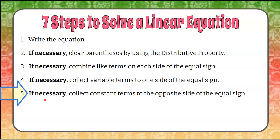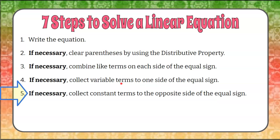Step five: if necessary, we're going to collect constant terms to the opposite side of the equal sign. We'll look to see if there are constant terms on the left and on the right, and collect using inverse operations — to the right if our variable term is on the left, and to the left if our variable term is on the right.